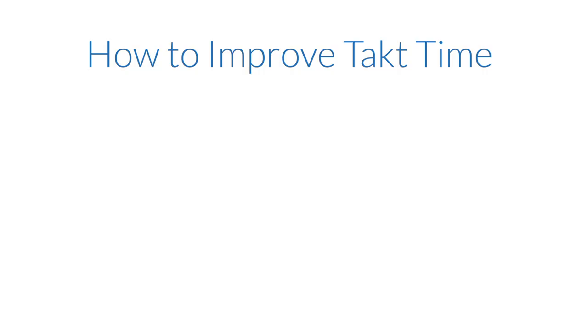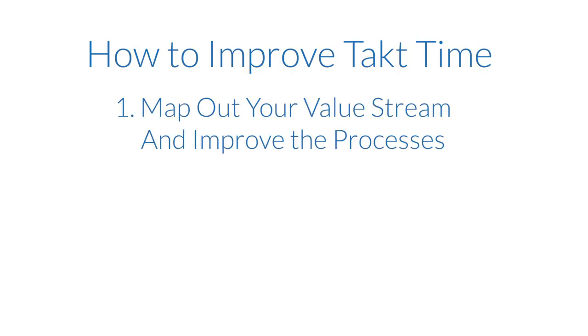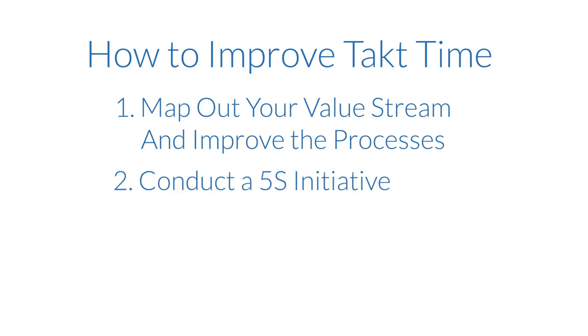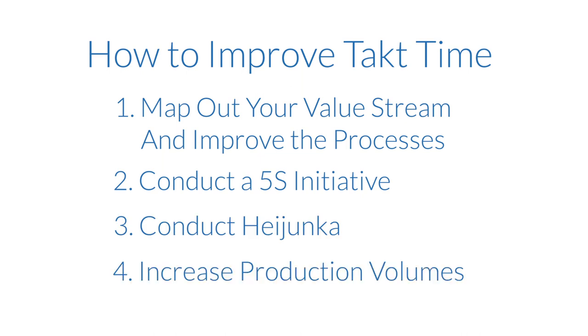How can you improve your tact time? First, map out your value stream and improve the processes. Conduct a 5S initiative. Conduct Heijunka. Increase production volumes. Finally, if your processes are optimized, look at increasing your capacity by hiring new staff, purchasing more equipment, or pulling more Kanban cards.